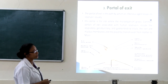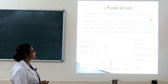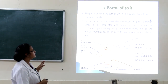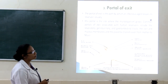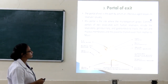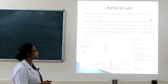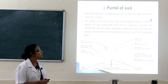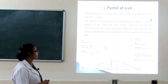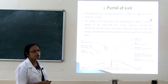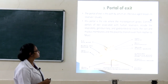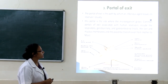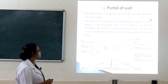The third component is the portal of exit — the path by which an infectious agent leaves its reservoir. Common portals of exit associated with human reservoirs include the respiratory tract, genitourinary tract, gastrointestinal tract, skin, mucous membrane, and placenta.